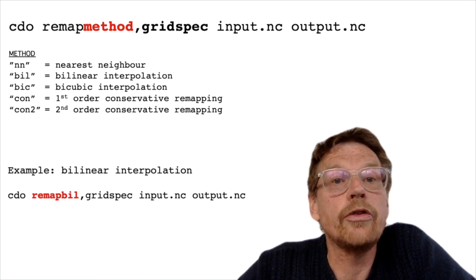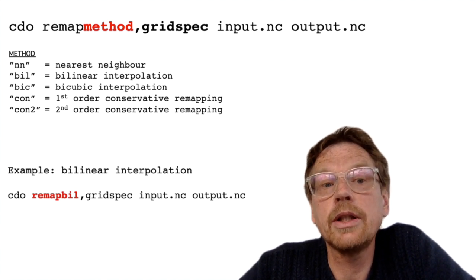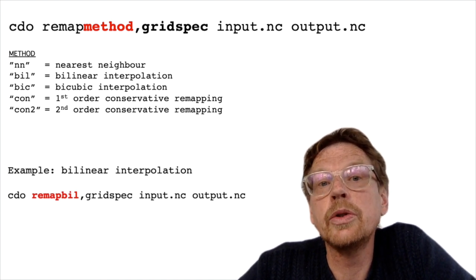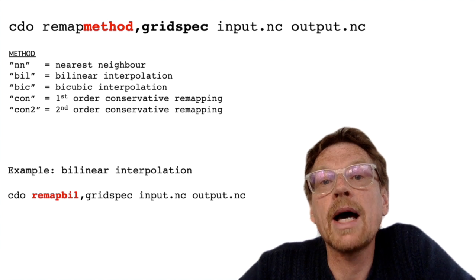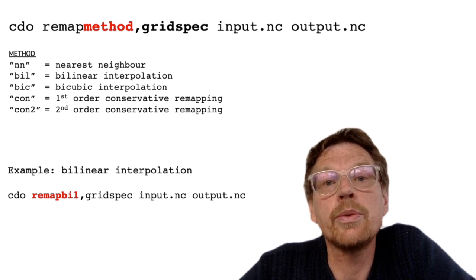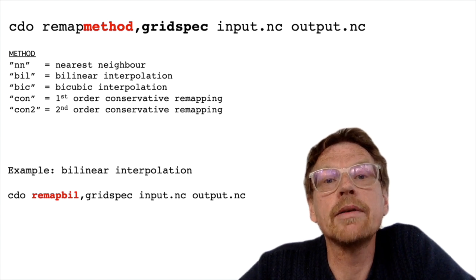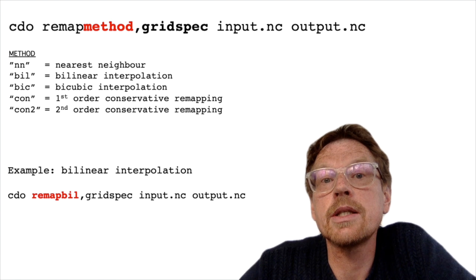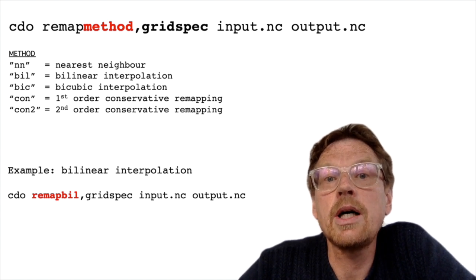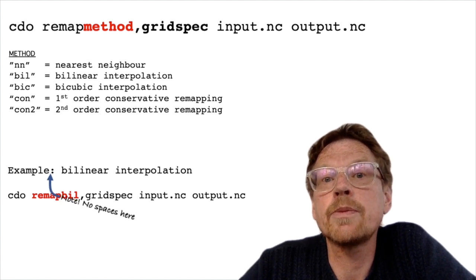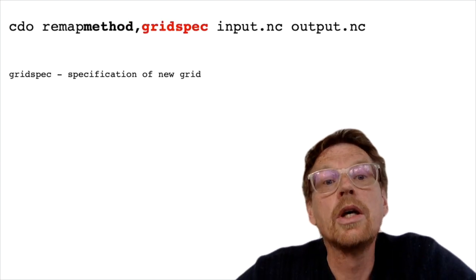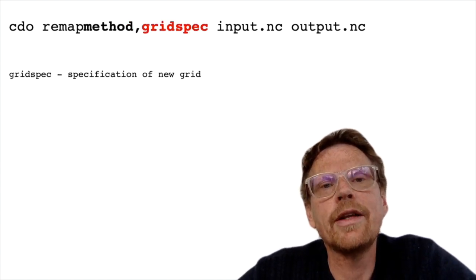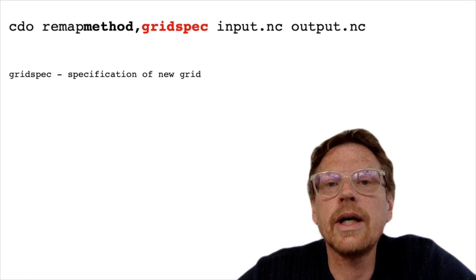For example, if we were going to use bilinear interpolation, we would use cdo remapbil — all one word with no spaces — to specify we want bilinear interpolation. It's important to note that there are no spaces between the command and the grid specification.